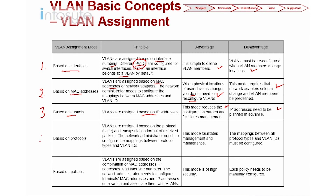The fourth method is protocol-based VLAN assignment. We can assign different VLANs based on different protocols — such as IPv4, IPv6, IPX, or AppleTalk. If your environment has different sets of protocols and you want to give them different VLANs, you can use protocol-based VLAN.